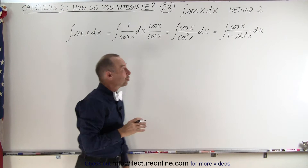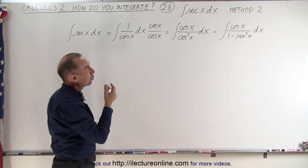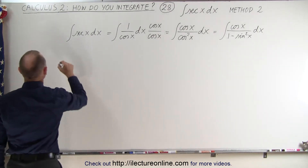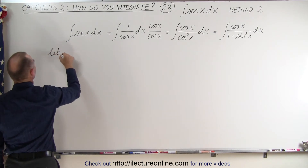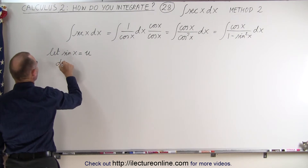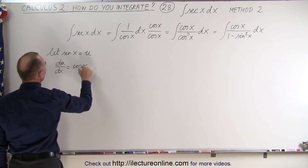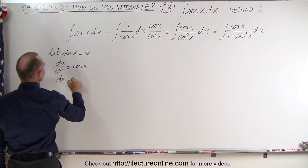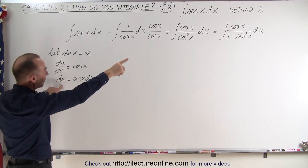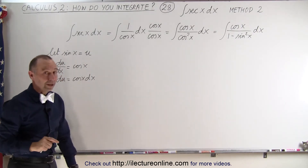Now we're going to make a substitution. We're going to let the sine of x equal u. So let sine of x equal u. That means that du/dx is equal to the derivative of this, which is the cosine of x, which means that du is equal to cosine of x dx. Notice that cosine of x dx is the numerator — that becomes du. And then the denominator becomes 1 minus u squared.